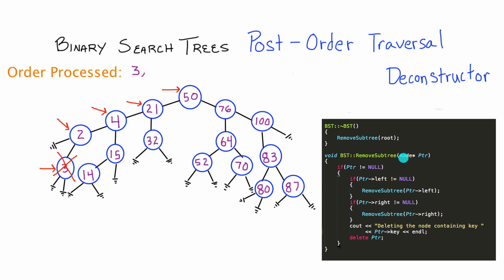Now that the remove subtree call that started with node 3 is done, we fall back to the method called with the pointer pointing to node 2. It has already checked for a left child and already checked for a right child — the right check sent us to node 3. So now node 2 falls to the delete step, prints that it's deleting node 2, and deallocates that memory. We then fall back to the method that called remove subtree with node 2's pointer, which just finished looking left and now gets to look right. Since it has a right child, it calls remove subtree passing in a pointer to node 15.